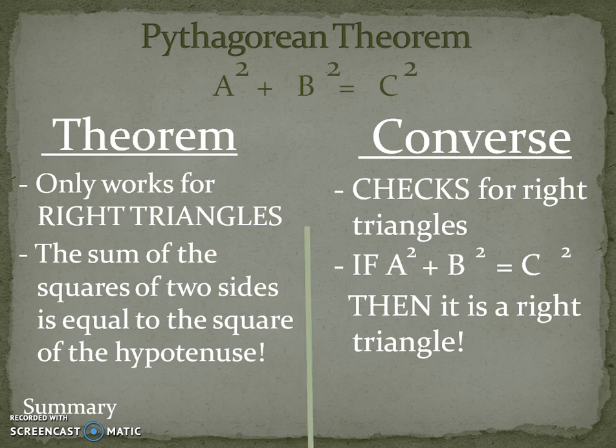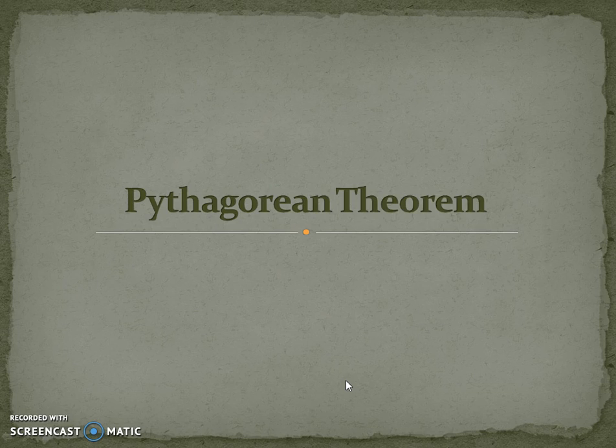And that is it. Here is your summary of the Pythagorean theorem. The Pythagorean theorem is A squared plus B squared equals C squared. The theorem only works for right triangles and it says that the square of both sides is equal to the square of the hypotenuse. And its converse checks to see if the triangle you are dealing with is, in fact, a right triangle. If the sides that you have for your triangle, A, B, and C, if A squared plus B squared equals C squared, then the triangle that you are working with is a right triangle. And that is all, ladies and gentlemen. Thank you so much for watching.